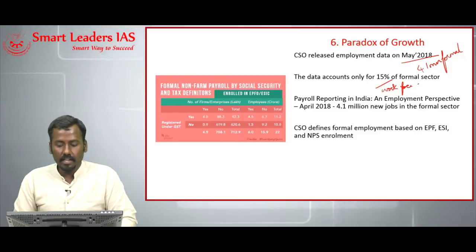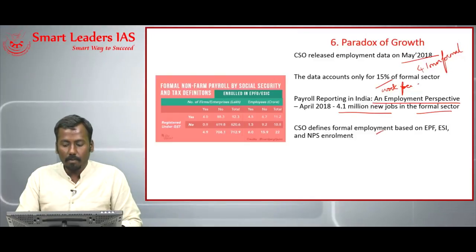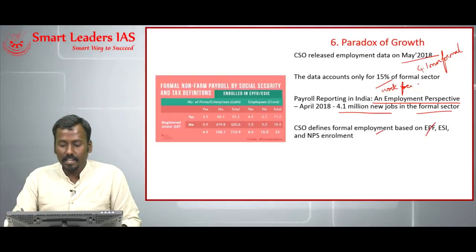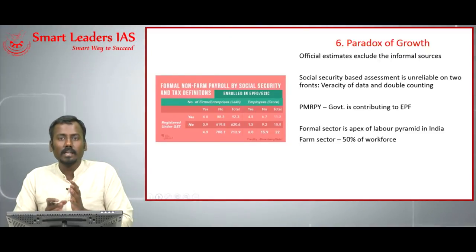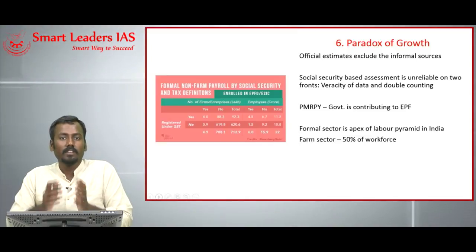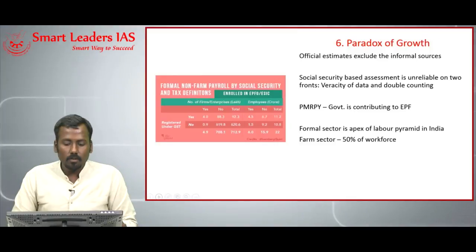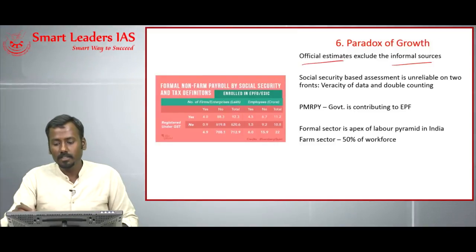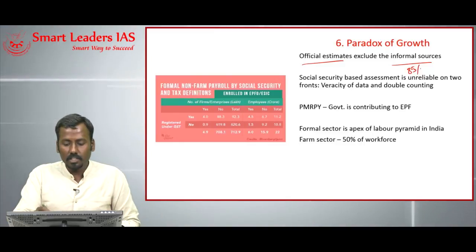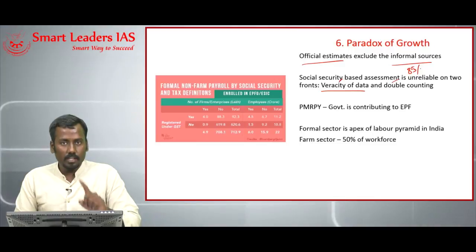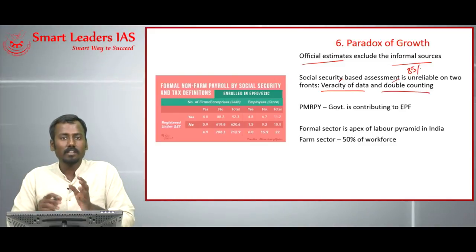The CSO report is titled 'Payroll Reporting in India: An Employment Perspective.' The CSO defined formal employment based on enrollments in the Employee Provident Fund, Employee State Insurance, and National Pension Scheme. There was a similar controversy during December based on social security calculations, which was also reflected in the Economic Survey 2017-18. The author says social security-based assessment is unreliable on two fronts: veracity of data and double counting, since a single employee could be a member of both social security organizations.